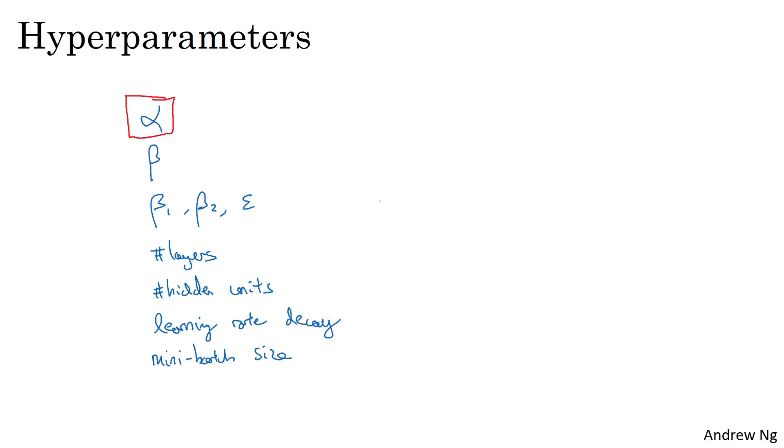Other than alpha, a few other hyperparameters I would maybe tune next would be maybe the momentum term. I say 0.9 is a good default. I'd also tune the mini-batch size to make sure that the optimization algorithm is running efficiently.